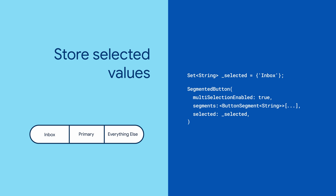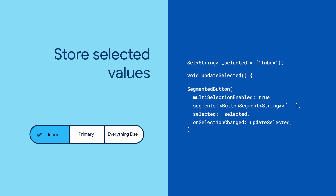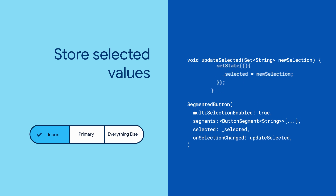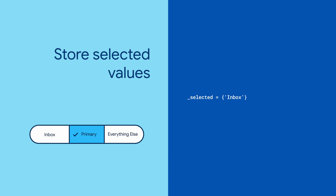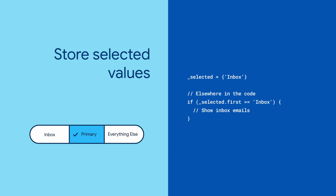Configure a variable to store the selected values and an onSelectionChanged callback. In the callback, you'll get a set that represents the new selection, so update your app state to reflect the new selection. If you only have a single selection, remember that you'll need to access the first element in the set to get your value.